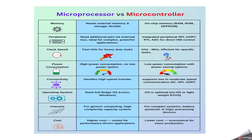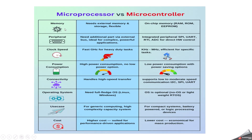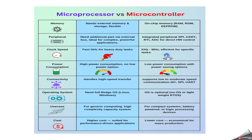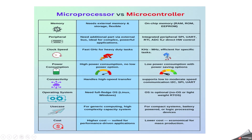Now let's discuss the real differences between a microprocessor and a microcontroller. In terms of memory, in the microprocessor case we need to connect everything externally — external memory, storage, and everything. But in the microcontroller case, we have on-chip memory like RAM, ROM, EEPROM, and Flash. Regarding peripherals, everything needs to be connected externally for a microprocessor, but in a microcontroller all peripherals are available internally.